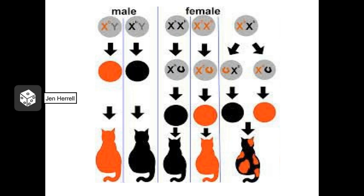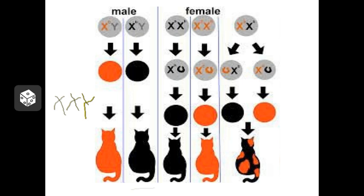Because male cats only have one copy of the X chromosome, they're only going to inherit one of the fur color alleles. So male cats are typically either orange or black, and you don't see male calico cats. There are some rare examples of male calico cats, and this occurs when they have two X chromosomes and a Y — something that in humans is called Klinefelter syndrome.